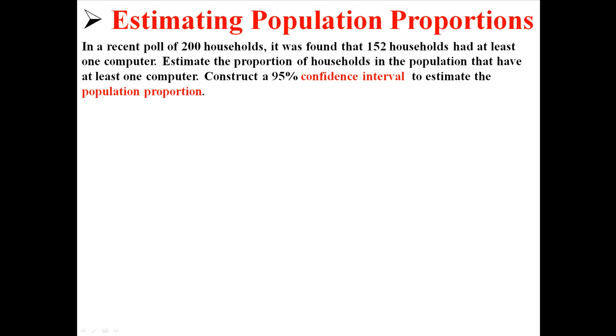Let me give you an example. In the last lecture, I had this: In a recent poll of 200 households, it was found that 152 households had at least one computer. Estimate the proportion of households in the population that have at least one computer, and then construct a 95% confidence interval to estimate the population proportion.